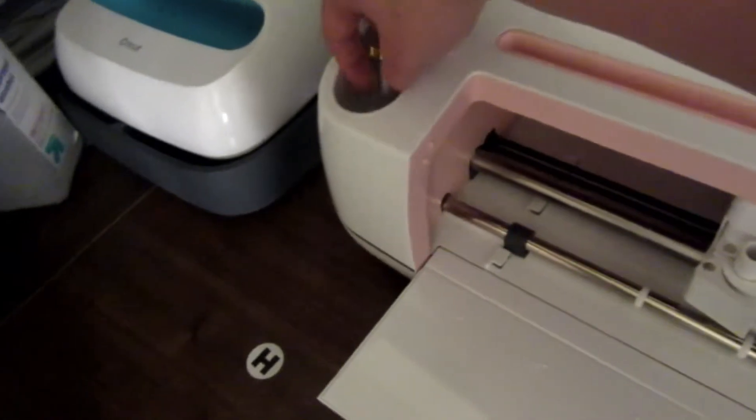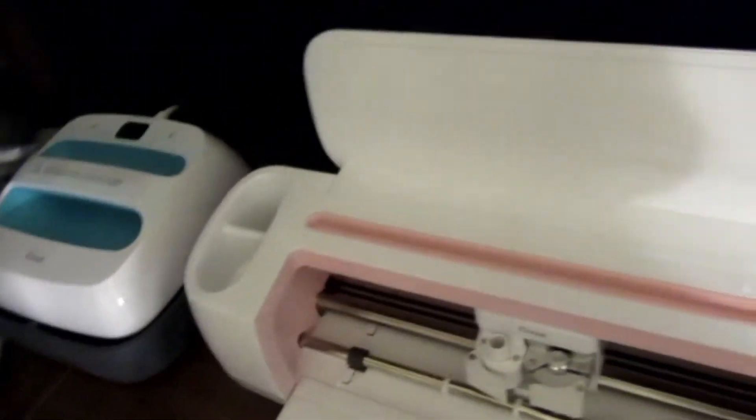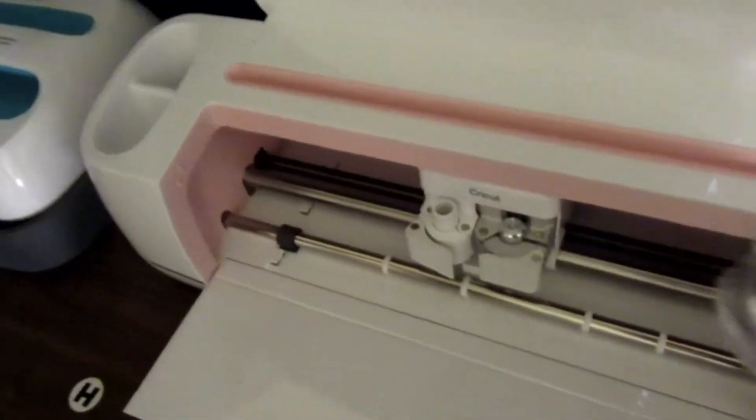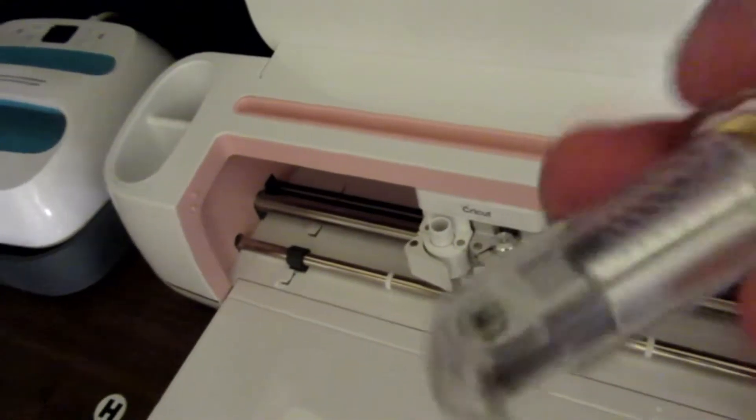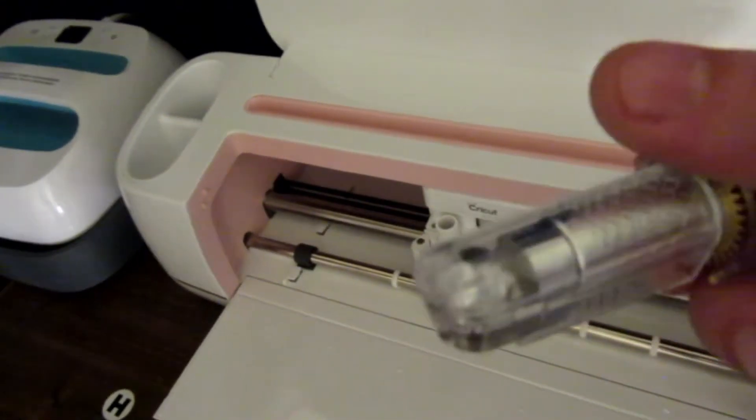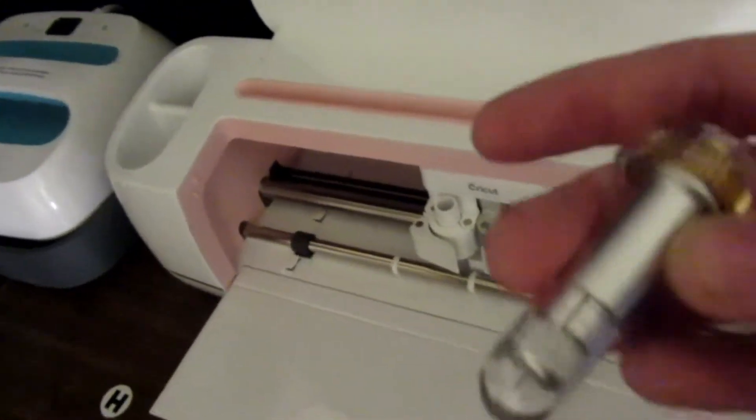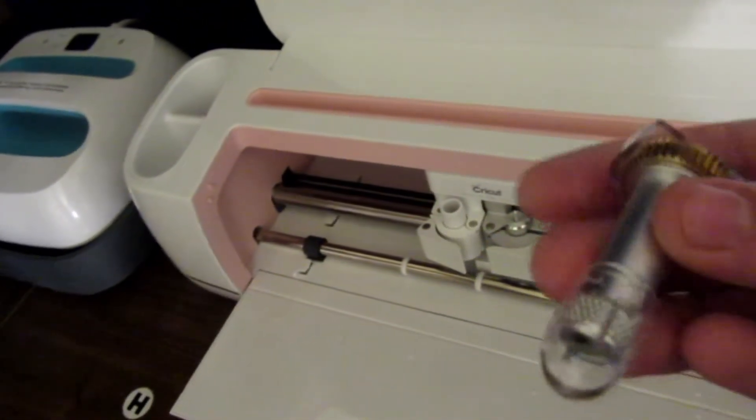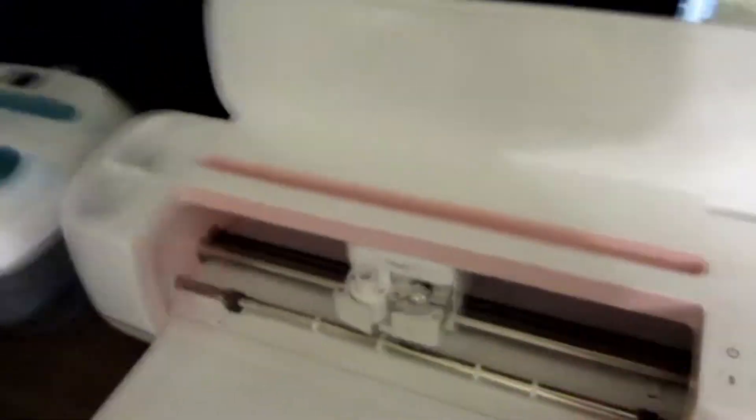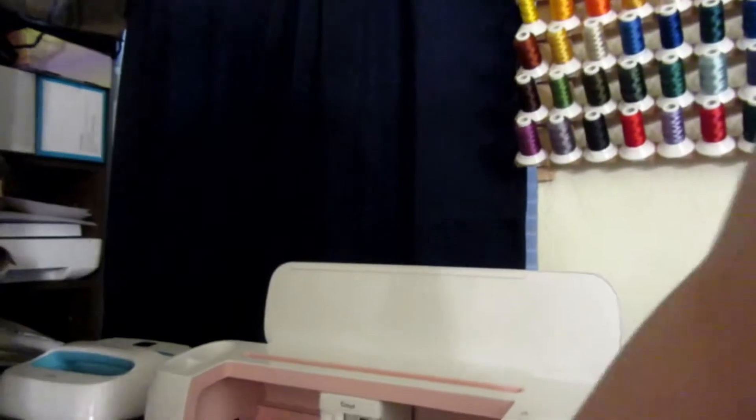So with the Maker, like I mentioned earlier, it does come with different blades. This one is a rotator blade. So basically it cuts the fabric. And then the knife blade, which is also the same thing as the deep blade that the Explorer uses. So with these blades, let's see if I can get this one out.